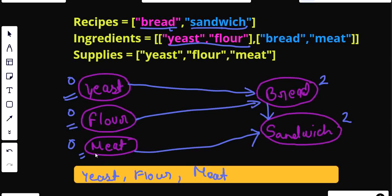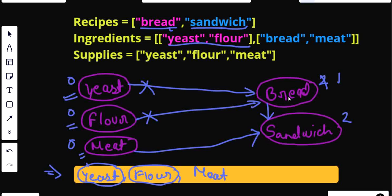Once the queue is filled with all zero in-degree nodes, traverse through the queue — pop each node and delete its outgoing edges. If I pop yeast, its outgoing edge to bread is deleted, so bread's in-degree becomes one. Since it's not zero, I proceed to the next element. I pop flour, delete its outgoing edge, and bread's in-degree reduces to zero. So now I insert bread into the queue. Then I pop meat.